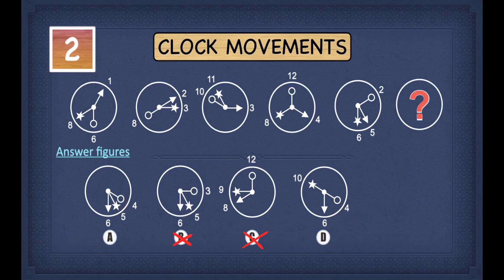Now to find the final answer, we look at the star hand. In the first diagram it points towards 8, in the second towards 3, in the third towards 11, in the fourth towards 8, and in the fifth towards 6.